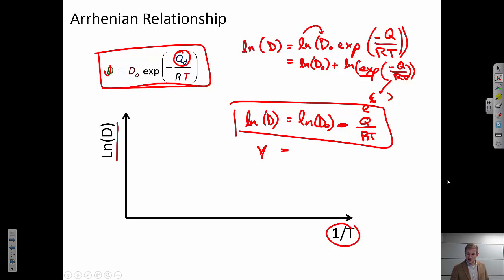And I can see immediately that this is going to be a linear relationship, right? y equals, in this case, b plus mx. So y is log of the diffusion constant. If we let x be 1 over T, then the slope equals negative q over r. And the intercept equals log of this pre-exponential factor.